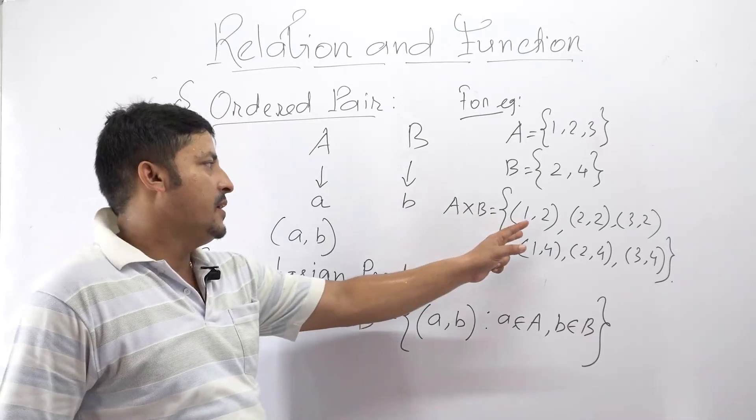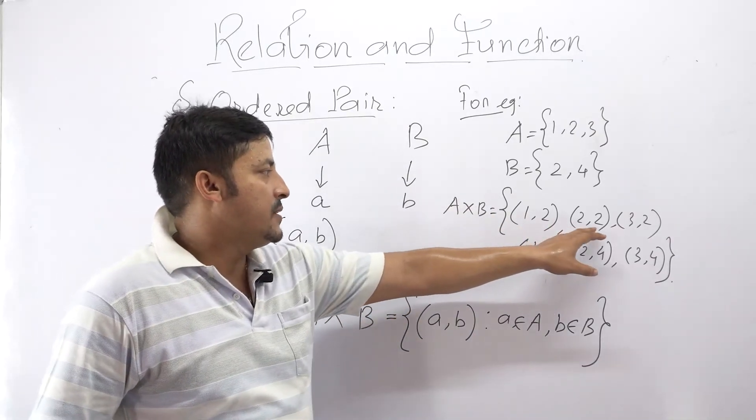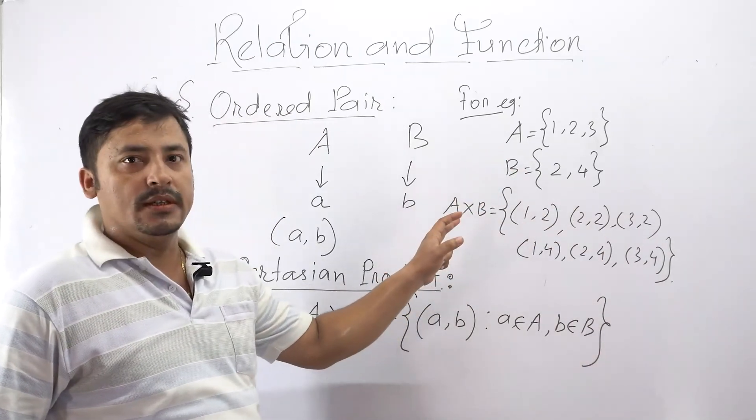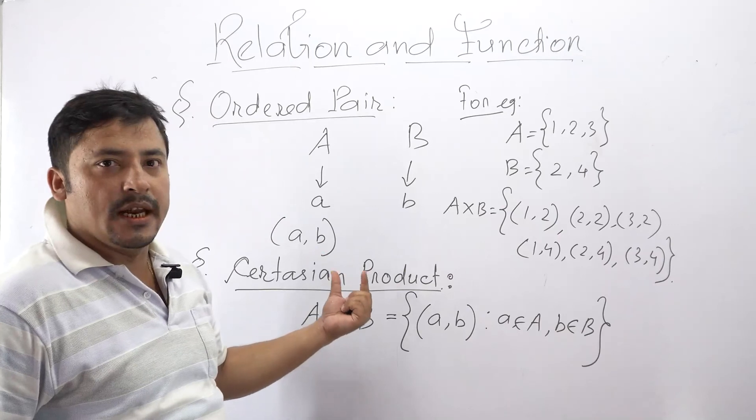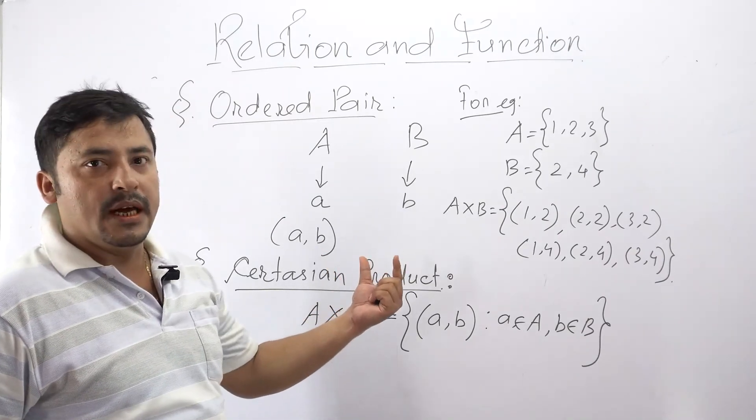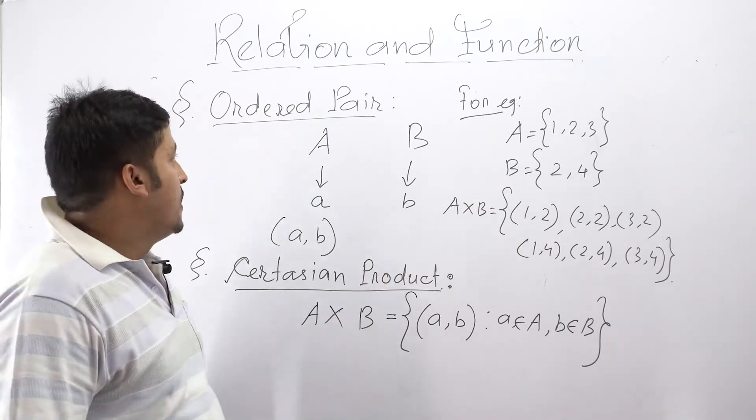Here you can see that all the ordered pairs are existing in Cartesian product. That means that is why I am saying the Cartesian product is the set of all the ordered pairs that A and B will have.